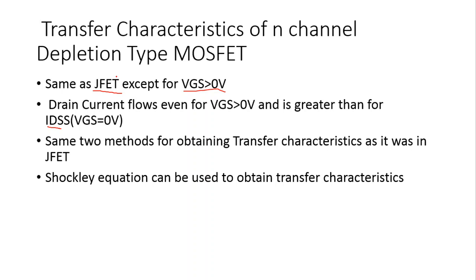In the case of the junction field effect transistor, the maximum current was IDSS, but that is not the case for the n-channel depletion type MOSFET, because we can have drain current greater than IDSS for VGS greater than 0 volt. The same two methods can be used to obtain the transfer characteristics as with the JFET.